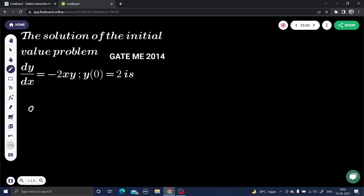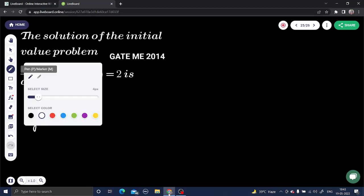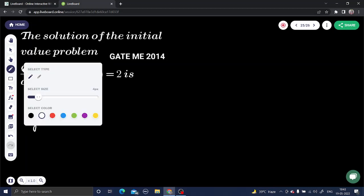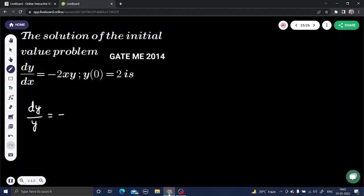dy to y, dy divided by y. Right hand side minus sign, x and x and 2 also. So minus 2 and x dx.